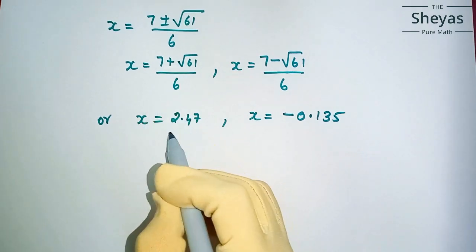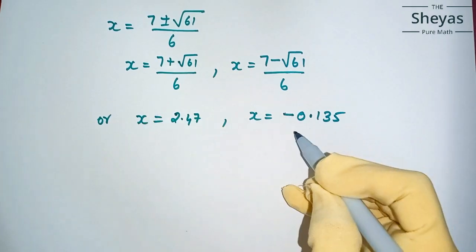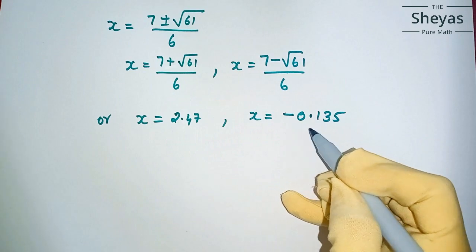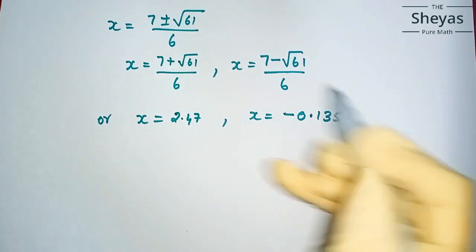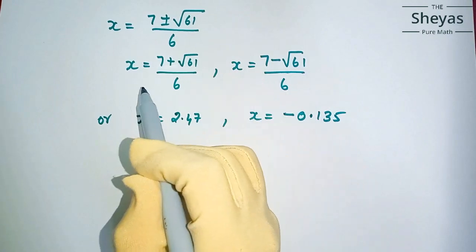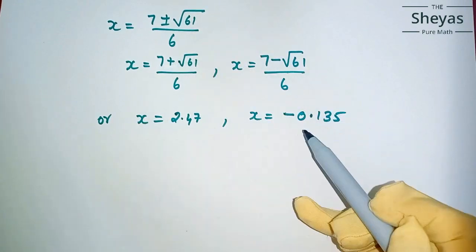You can use the calculator and find out the value. x equals 2.47, and x equals minus 0.135. This is also the answer. If you want, you can use the calculator and write it in decimal.